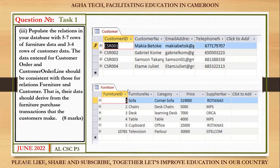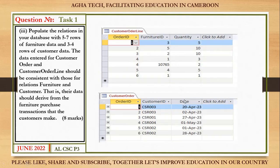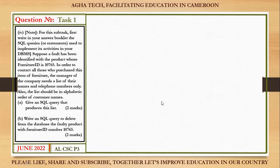Next, they say to populate the relations in your database with five to seven rows of furniture data and three to four rows of customer data. The data entered for CustomerOrder and CustomerOrderLine should be consistent with the Furniture and Customer relations — that is, the data should derive from the furniture purchase transactions the customer makes. You fill all four tables with your own values.